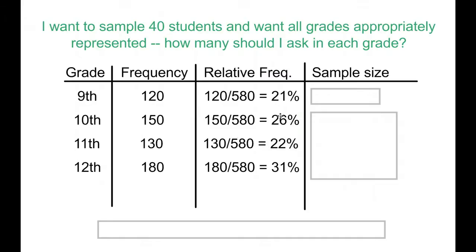The new part is saying, okay, now that I know my percentage, my relative frequency, how many of the 40 students that I'm sampling should come from this particular category? And so for the first one, I take my 0.21, or 21%, times 40, and that's going to give me 8. So it seems like roughly 8 people of my 40 should come from the 9th grade.